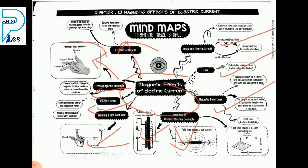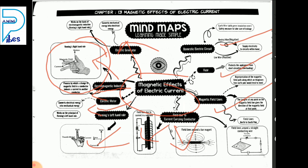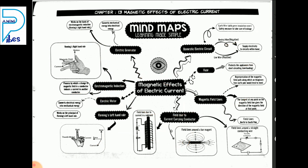In Fleming's right hand rule, we place the hand in the horizontal direction: thumb finger shows motion, forefinger shows magnetic field, mid finger shows current. In Fleming's left hand rule, we place the hand in the vertical direction: forefinger shows magnetic field, mid finger shows current, thumb finger shows motion. These are the main topics we covered.